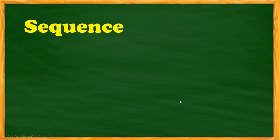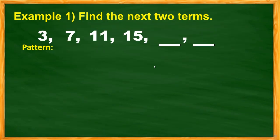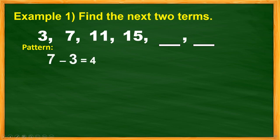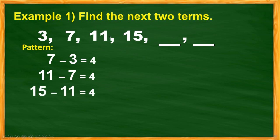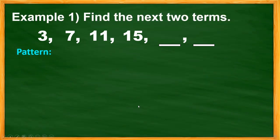Now let's proceed to our discussion for today. Sequence is a set of numbers written in a special order by the application of a definite rule. Let's have some examples. Find the next two terms in this sequence: 3, 7, 11, and 15. This would be the pattern — if we subtract 7 minus 3, the answer is 4; 11 minus 7, the answer is 4; 15 minus 11, the answer is 4. As you can see, they have a common difference.